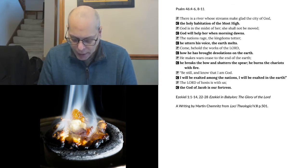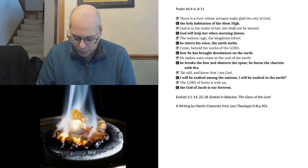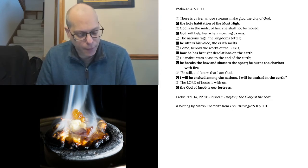And above the expanse, over their heads, there was the likeness of a throne, an appearance like sapphire. And seated above the likeness of a throne was a likeness with a human appearance. And upward, from what had the appearance of his waist, I saw as if it were gleaming metal, like the appearance of fire enclosed all around. And downward, from what had the appearance of his waist, I saw, as it were, the appearance of fire, and there was brightness around him. Like the appearance of the bow that is in the cloud on the day of rain, so was the appearance of the brightness all around. Such was the appearance of the likeness of the glory of the Lord. And when I saw it, I fell on my face, and I heard the voice of one speaking.